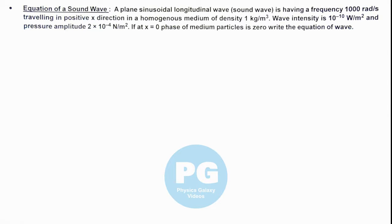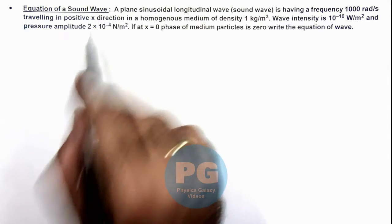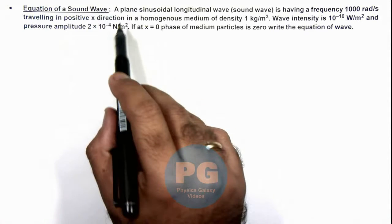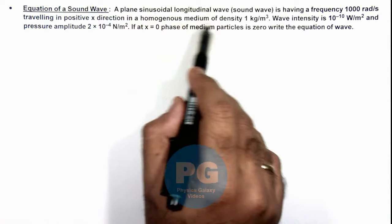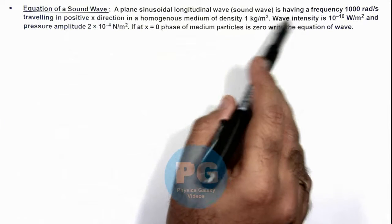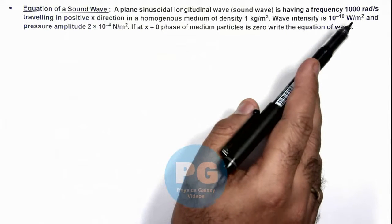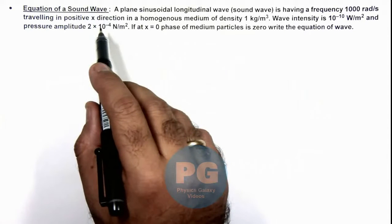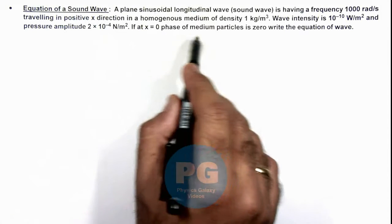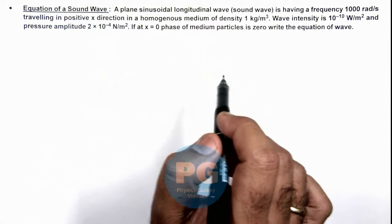In this illustration we'll analyze the equation of a sound wave. We are given that a plane sinusoidal longitudinal wave, which is a sound wave, is having a frequency of 1000 radians per second traveling in positive x direction in a homogeneous medium of density 1 kilogram per meter cube.